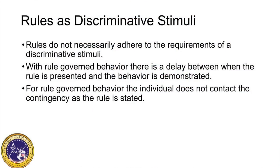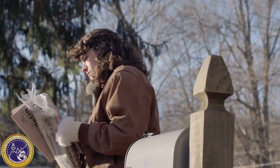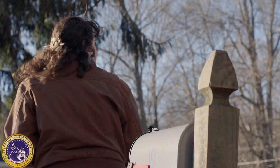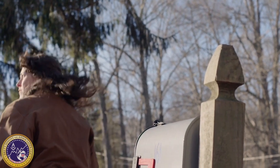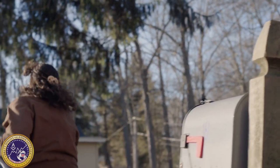Some research theorizes rules as discriminative stimuli, but rules do not necessarily adhere to all the requirements of a discriminative stimulus. The discriminative stimulus immediately strengthens behaviors, but with rule-governed behavior, there's a delay between when the rule was presented and when the behavior was demonstrated. Also, part of the requirement of the discriminative stimulus is that it evokes behaviors that have been reinforced in the past. For rule-governed behavior, the individual does not necessarily contact the contingency as the rule is stated. For example, the rule 'look both ways before you cross the street' — the individual is not told the rule immediately before crossing the street and does not have to contact the inverse condition in order to follow that rule.